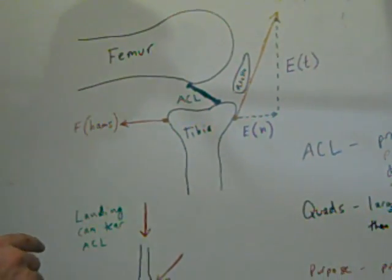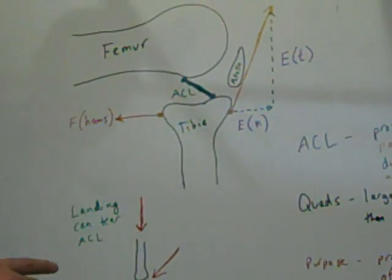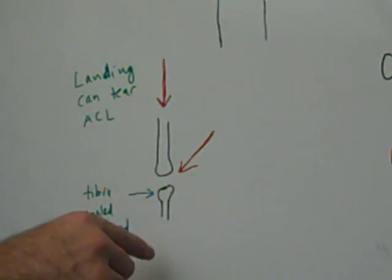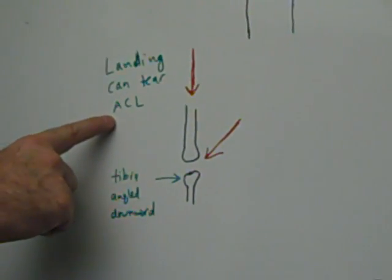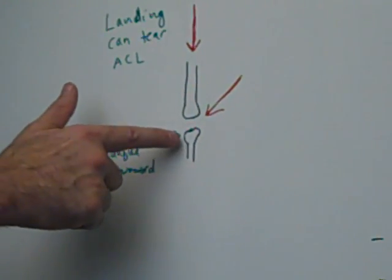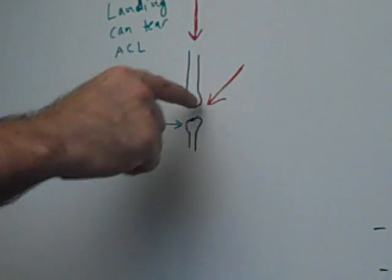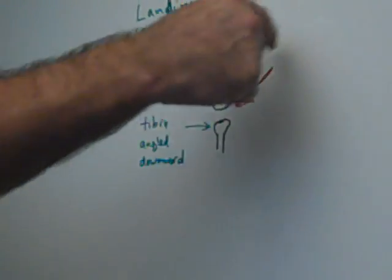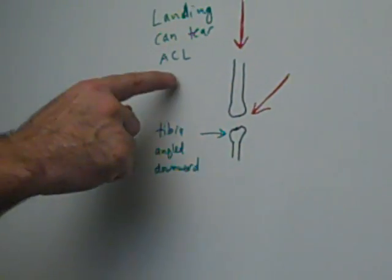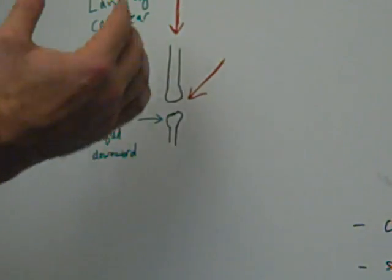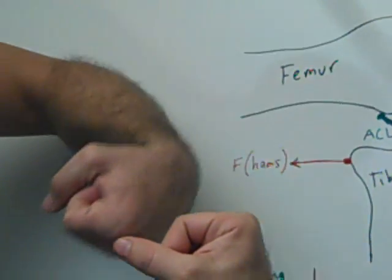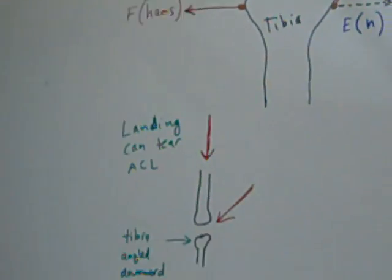So strong hamstrings are really important. The next thing I want to talk about is here's an example where the femur and the tibia are in line with one another. And I wanted to show how landing can tear the ACL because see how the tibia is angled downward just a little bit. As you land, this femur will want to slide down this way in this direction because the tibia is angled downward. So that's how landing can tear the ACL because the tibia is angled downward. It wants to slide this way. So you get that anterior translation with landing.